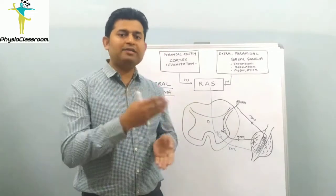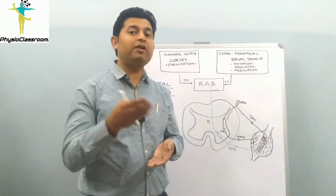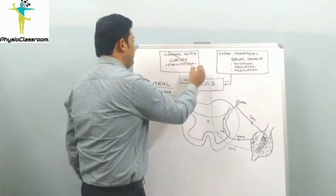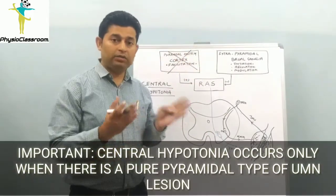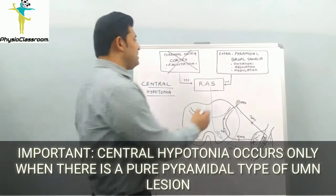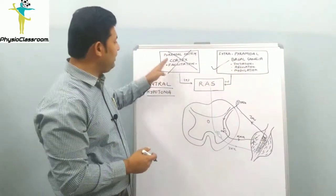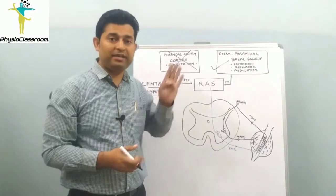This type of UMN disorder is the third variety, in which there is pure pyramidal lesion. That means the extrapyramidal system is functioning properly, but there is a problem only in the pyramidal tracts and structures.